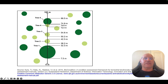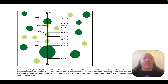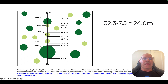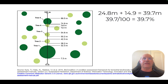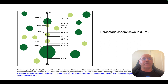We have measurements for the dominant layer segments only — we're not counting the light green trees. To work out the percentage: 32.3 minus 7.5 gives us 24.8 metres; then 89.5 minus 74.6 gives us 14.9 metres. Adding those together gives us 39.7 metres, so the percentage canopy cover is 39.7%. The trick is that they've given us data for the other trees too, but we only use the dominant layer.